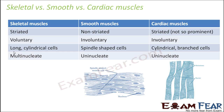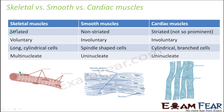Let us have a quick comparison between skeletal, smooth, and cardiac muscles. Skeletal muscles are striated; smooth muscles are non-striated; cardiac muscles are striated but not very prominently. Skeletal muscles are voluntary whereas the other two are involuntary. For shape: skeletal muscles are long cylindrical cells; smooth muscles are spindle-shaped with pointed ends; cardiac muscles are cylindrical branched cells — not one single cylinder but two or three cylinders in a branched network. Skeletal muscle cells are multinucleate; smooth muscles and cardiac muscles are both uninucleate.